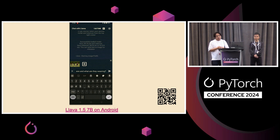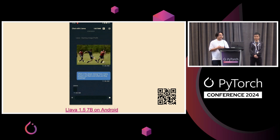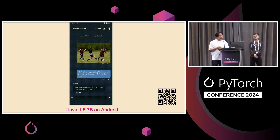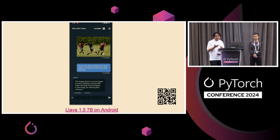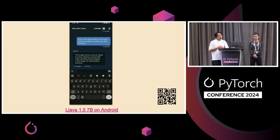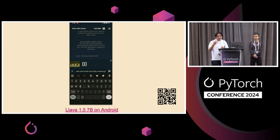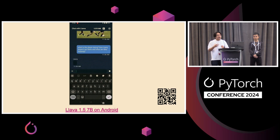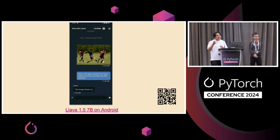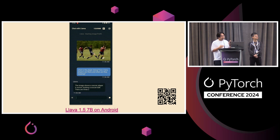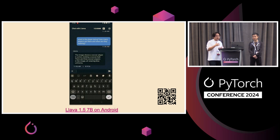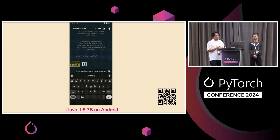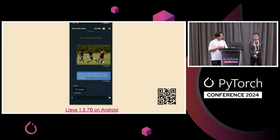There's also an emergence of multimodal models. We are expanding our functionality to multimodal — specifically showcasing LLaVA, which takes image and text input and is able to reason about the image and answer questions. In this case, it's asking about soccer players: what are they wearing, what are they doing — and it is able to answer. We are hitting roughly 8 to 9 tokens per second here.